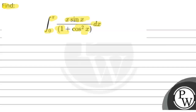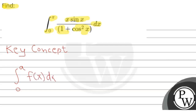Now we have to find the definite integral value. The key concept here is the property of integrals: the integration from 0 to a of f(x) dx is equal to the integration from 0 to a of f(a − x) dx. Using this property, we will solve this question.